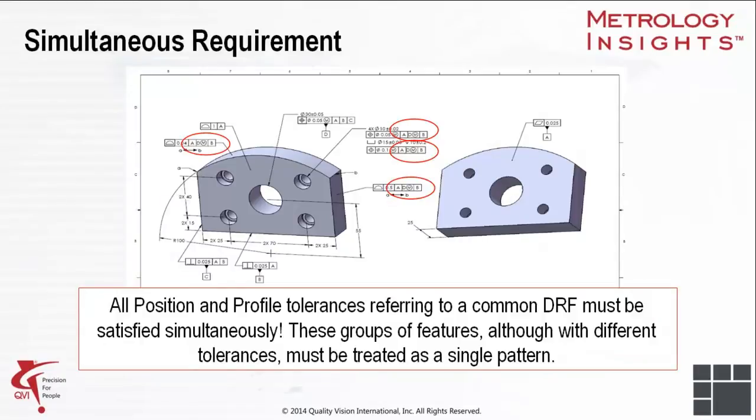First, let us try to answer the question, what is simultaneity? The rule of simultaneous requirements applies to all position and profile tolerances referring to a common datum reference frame. For example, here we see several features whose feature control frames reference the same datums in the same order with the same modifiers. These features are considered as a composite pattern, whose tolerances must be met at the same time.